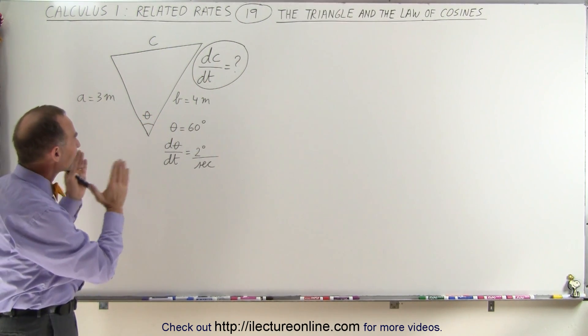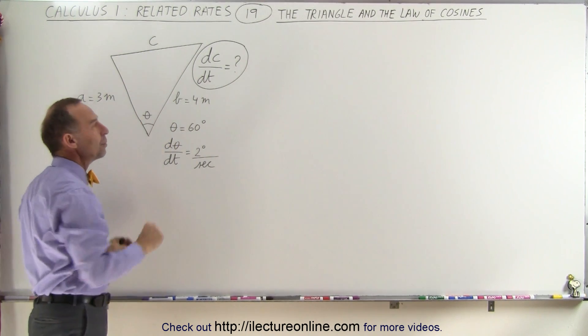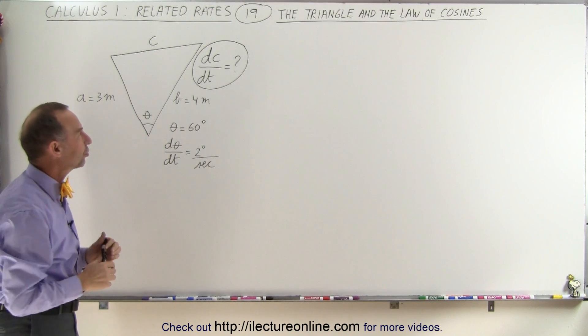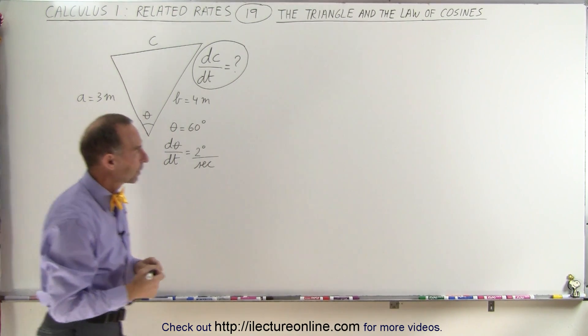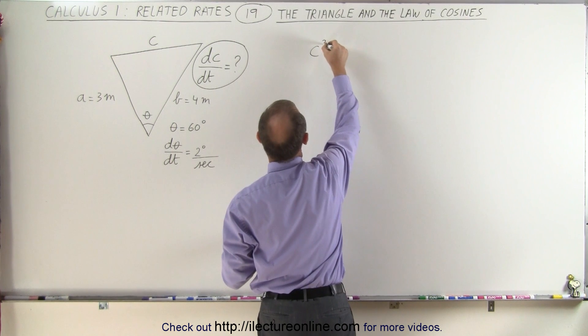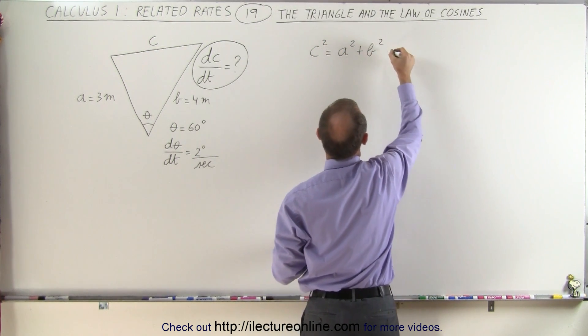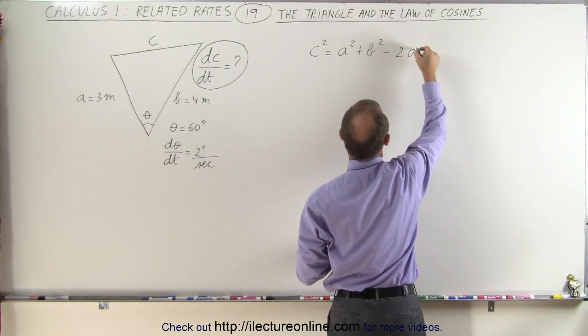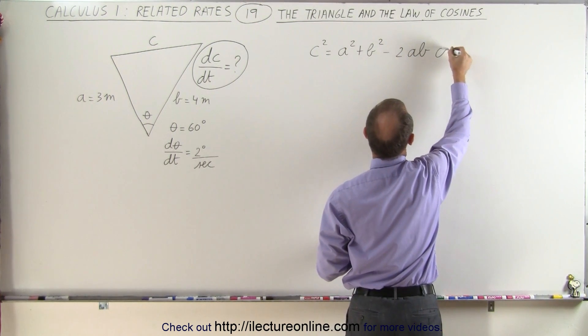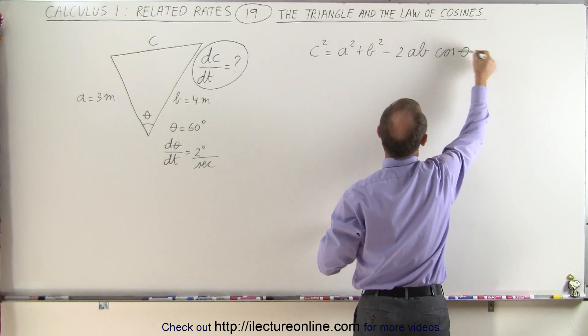Now the way the problem is given, since we're given A, B, and the opposing angle to C, we can actually use the law of cosines to help us solve this. The law of cosines tells us that C squared is equal to A squared plus B squared minus 2 times the product of A and B times the cosine of the angle opposite to C, which in this case we call theta.